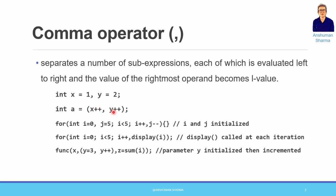So x will be incremented and y will be incremented. Similarly, in the for loop we have two different variables separated with the comma operator. In the for loop, the first and third expressions can be comma-separated, and the second expression is the condition where we use relational and logical operators to specify a complex expression.